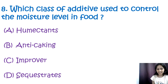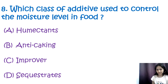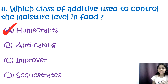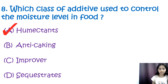Question 8: Which class of food additive is used to control the moisture level in food? Options are humectants, anti-caking agents, improvers, and sequestrants. The correct answer is A, humectants. Humectants are a class of food preservatives used to control the moisture level in foods. They help retain moisture and prevent food from drying out.